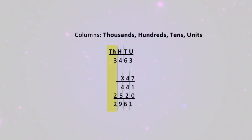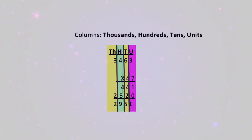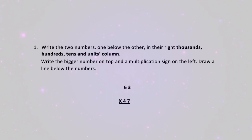Multiplication is split into columns. Here we split the columns into thousands, hundreds, tens, and units. Rule the line between your columns to make sure you put your numbers in the correct place. Step 1: write the two numbers one below each other in their correct thousands, hundreds, tens, and units columns. Write the bigger number on top and the multiplication sign on the left.